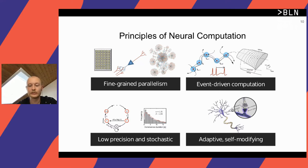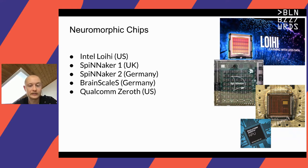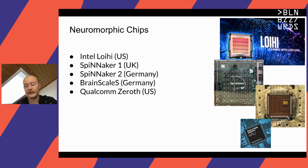The holy grail of all this is online adaptation or learning in real time. All of this is not just theoretical — there have been a lot of developments in the hardware community developing neuromorphic hardware or neuromorphic chips. Prominent examples include Intel Loihi developed in the US, and the Spinnaker platforms one and two developed in the UK and Germany, based on many small ARM core processors architectured in a specialized way. There are even analog-digital mixed chips like BrainScales and others.